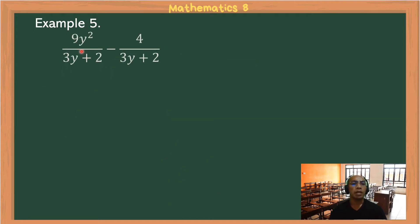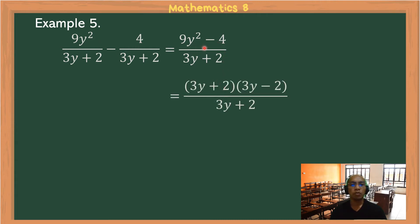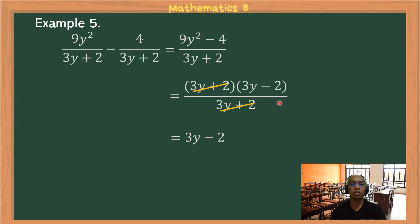Example 5: 9y²/(3y+2) − (y−4)/(3y+2). Copy the common denominator 3y+2. The numerator becomes 9y² − 4, which is a difference of two squares since 9, 4, and y² are all perfect squares. Factoring: √(9y²) = 3y and √4 = 2, giving (3y+2)(3y−2). The factor (3y+2) cancels with the denominator, leaving 3y − 2.